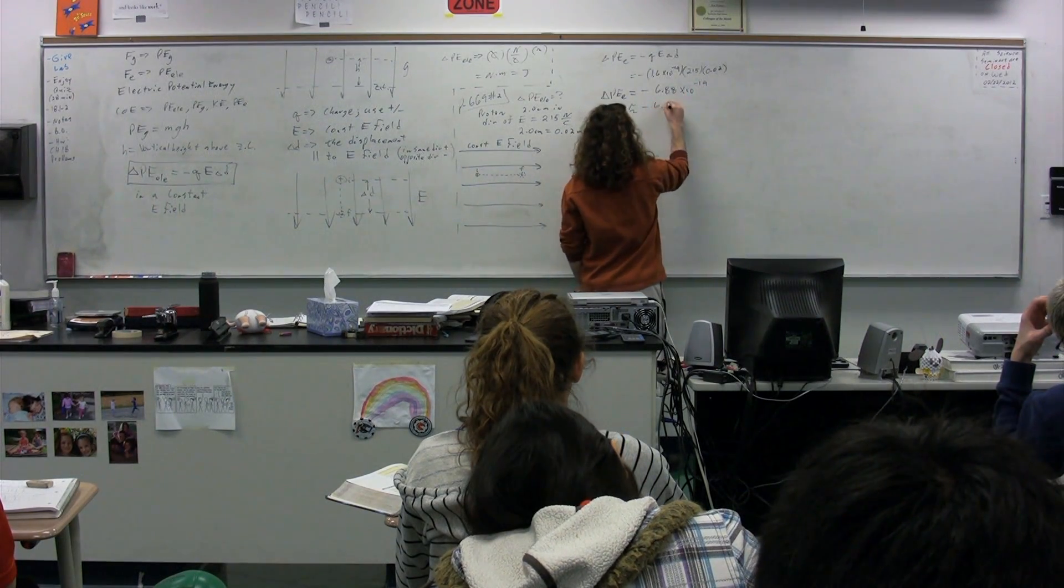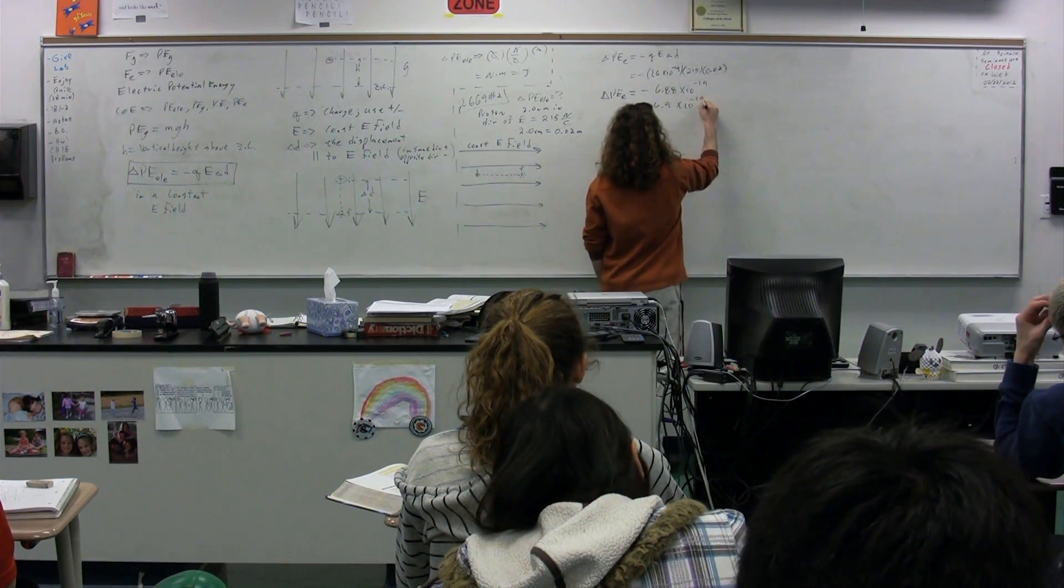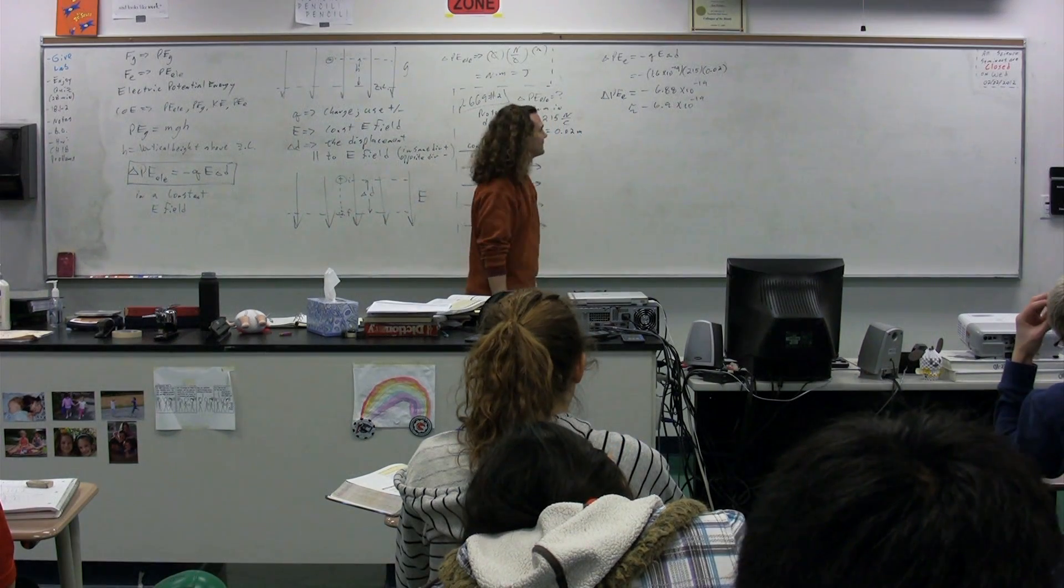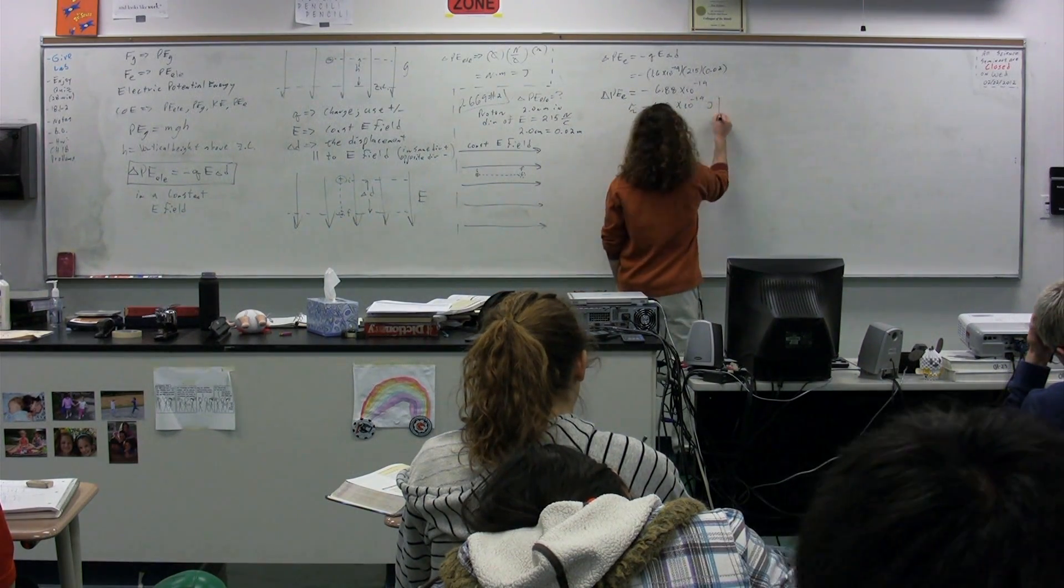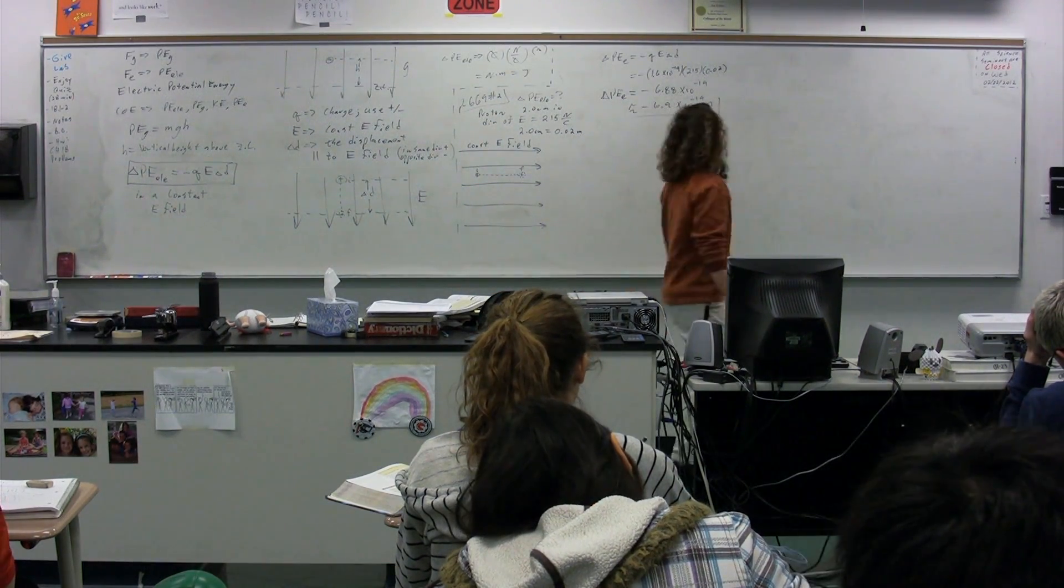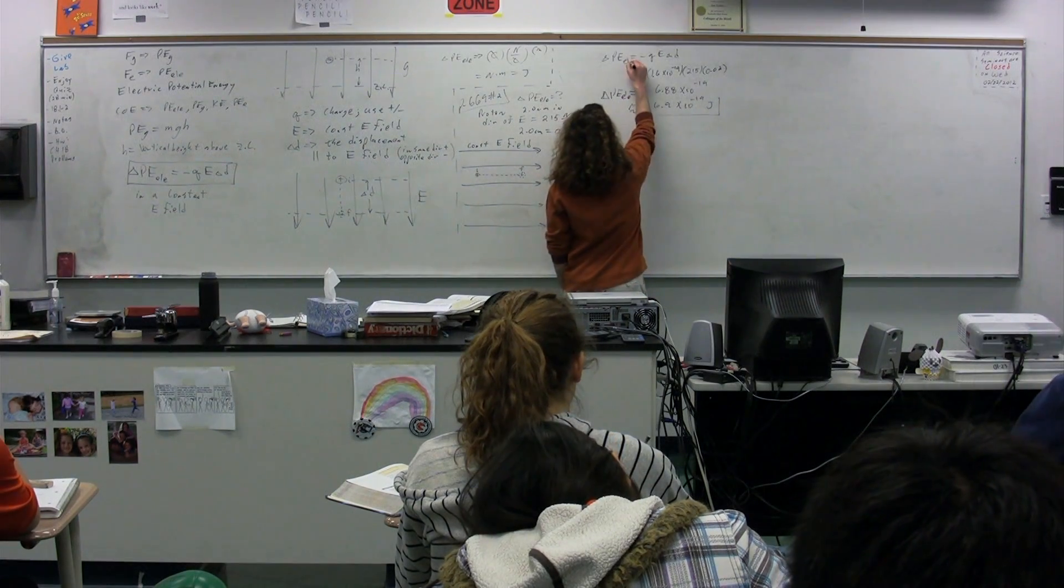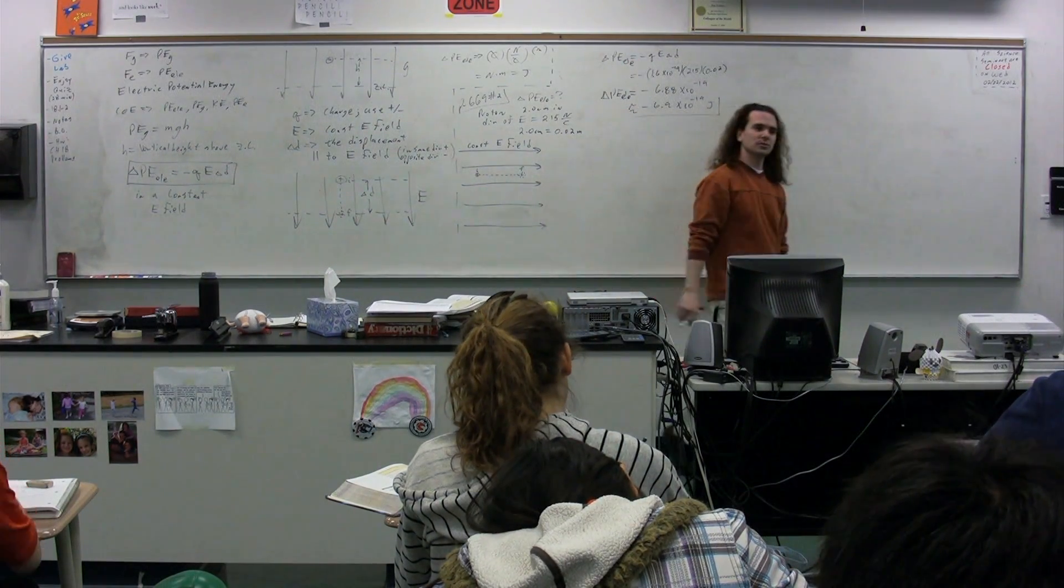So negative 6.9 times 10 to the negative 19. Dimensions we get? Joules. It's just a change in the electric potential energy. Therefore it's just going to be in joules.